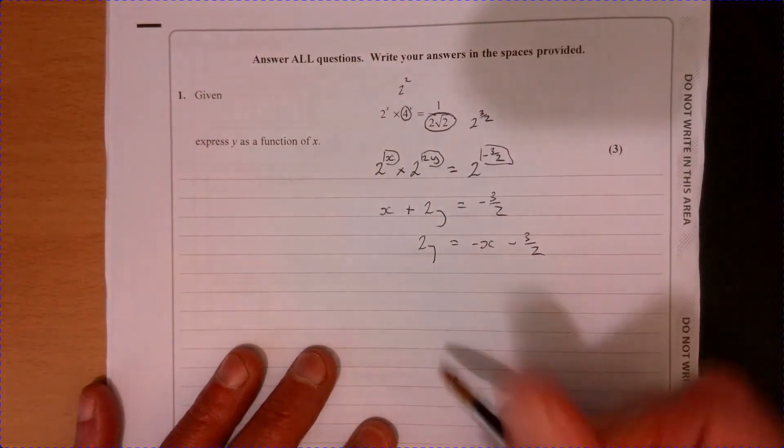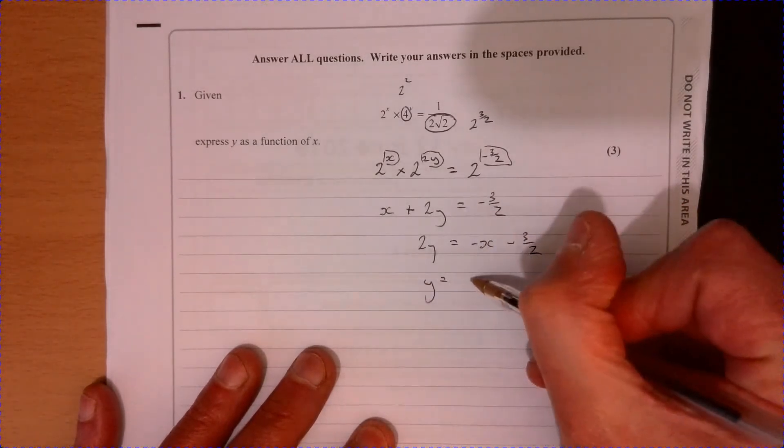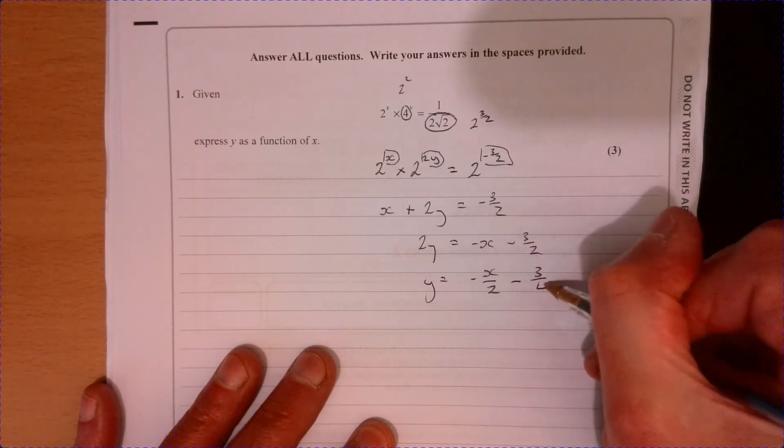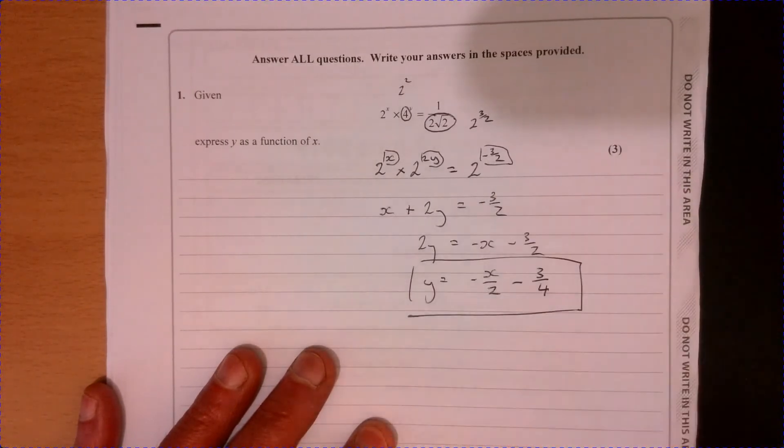And then divide by two. So y equals minus x over two minus three over four. And there we are.